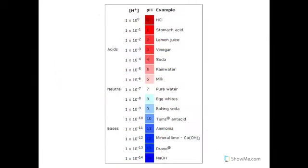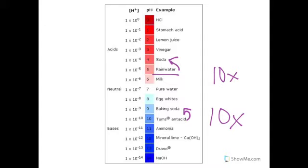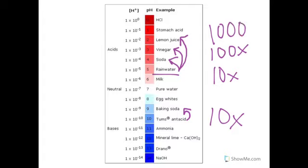One thing you need to remember about the pH scale is that it is a logarithmic scale. So every time you go down one pH number, you're actually going down 10 times that concentration. Take rainwater, for example, at pH 5 — definitely acidic rainwater. If you go from 5 to 4, you're changing 10 times the concentration. From 5 to 3, that's 100 times. And from 5 to 2, that's 1,000 times difference. So lemon juice is actually 1,000 times more acidic than rainwater.